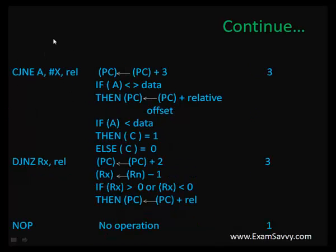Another CJNE example: immediate data and the data in the accumulator are compared. If equal, the next line is performed. If not equal, it jumps to some label with an address. DJNZ (decrement and jump if non-zero): we decrement a register for counting purposes. We set the count to some value and decrement down to zero — if not yet zero, it loops continuously. Finally it ends when it reaches zero. The size is 3 bytes.